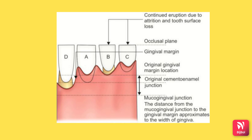In picture C, there is incisal wear and the tooth is continuously erupting, but the dento-gingival complex is also moving along with the tooth. Therefore, there is no gingival recession and the width of attached gingiva is increasing. This process in picture C is called passive eruption — the migration of the junctional epithelium to the root surface caused by the tooth erupting through the gingiva to maintain occlusal contact. In picture D, there is no incisal wear and only the gingiva is migrating apically, resulting in gingival recession again.